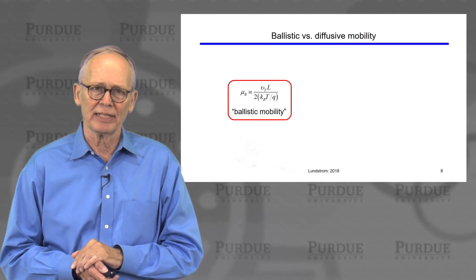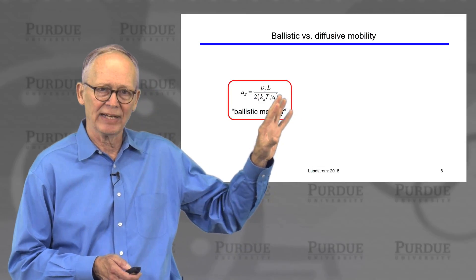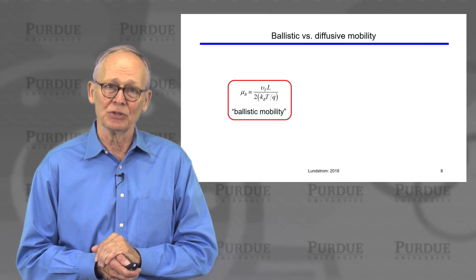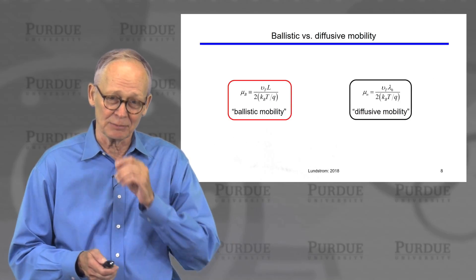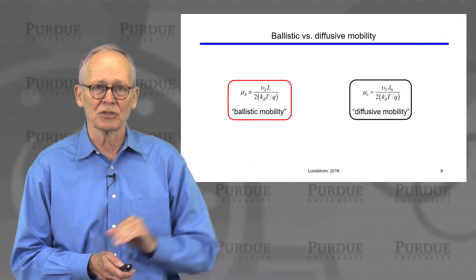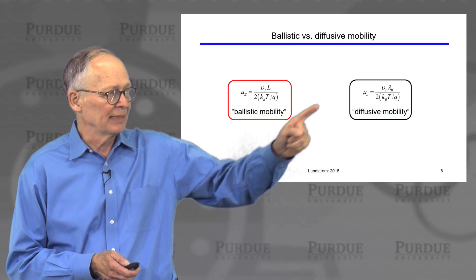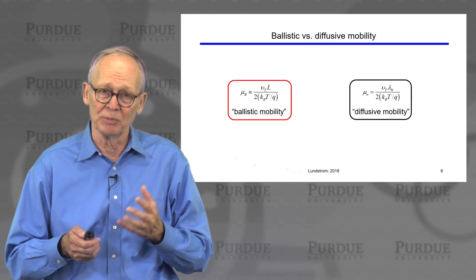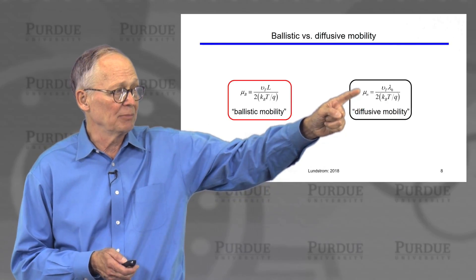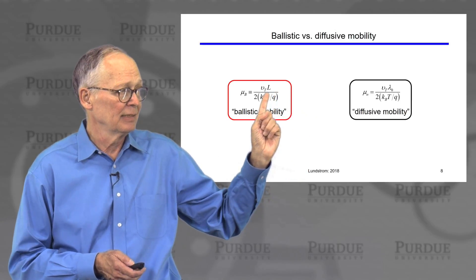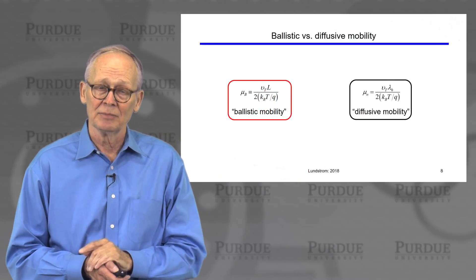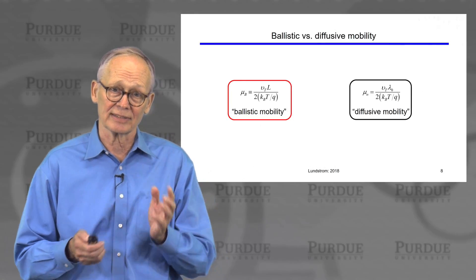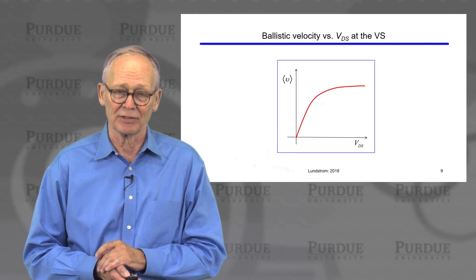The ballistic mobility we introduced had a well-defined definition — a quantity with the physical units of mobility, very similar to the diffusive mobility with one change. In the diffusive mobility, the mobility is limited by scattering in the bulk. In the ballistic case, we simply replaced the mean free path due to backscattering by the channel length itself, because in a ballistic device the furthest an electron can travel is from source to drain — it scatters in the source and scatters in the drain, so that's the distance between scattering events.